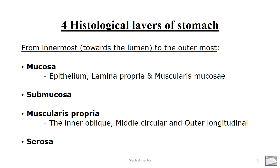The muscularis propria has three layers: the inner oblique, middle circular, and the outer longitudinal layer. The function of the muscularis propria is to control the peristaltic movement.